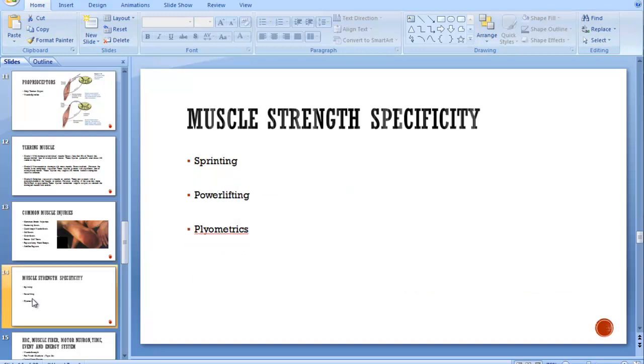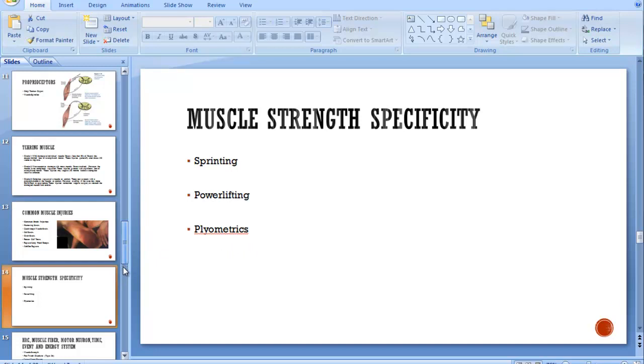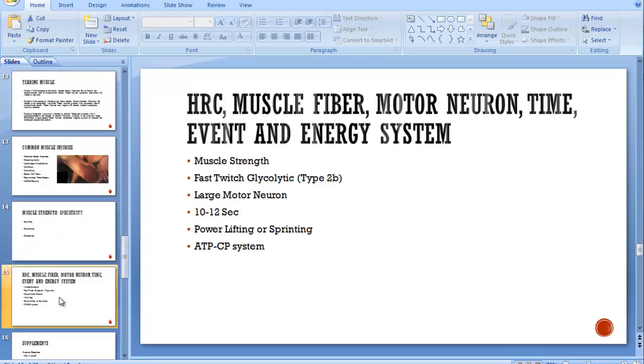Muscle strength specificity. If you're training for sprinting, you want it as specific to that sport as possible. So you're going to go out and do a lot of sprints. If you're training for powerlifting, majority of the activities that you do should be powerlifting. You want them as sport specific as possible. Anything that involves plyometrics like high jumping, you want it as close to the real sport as possible.